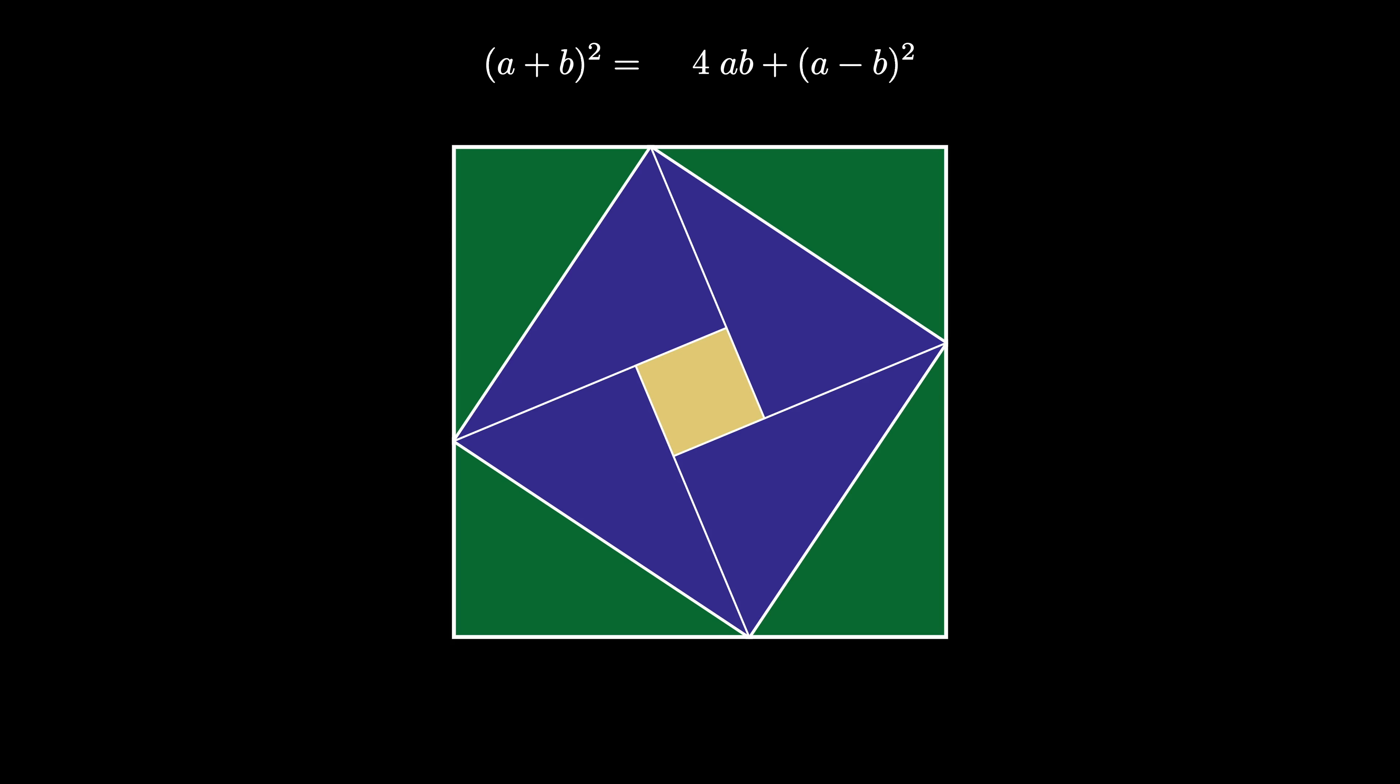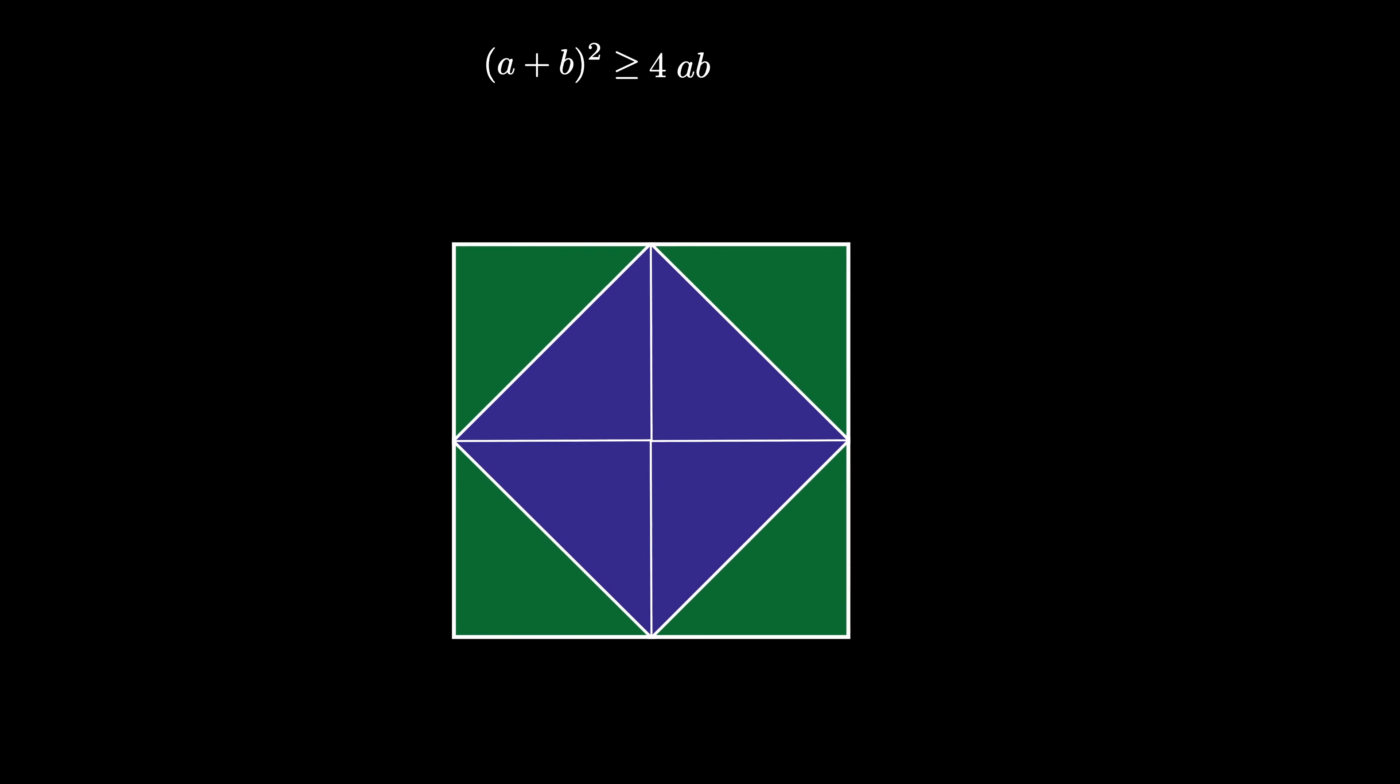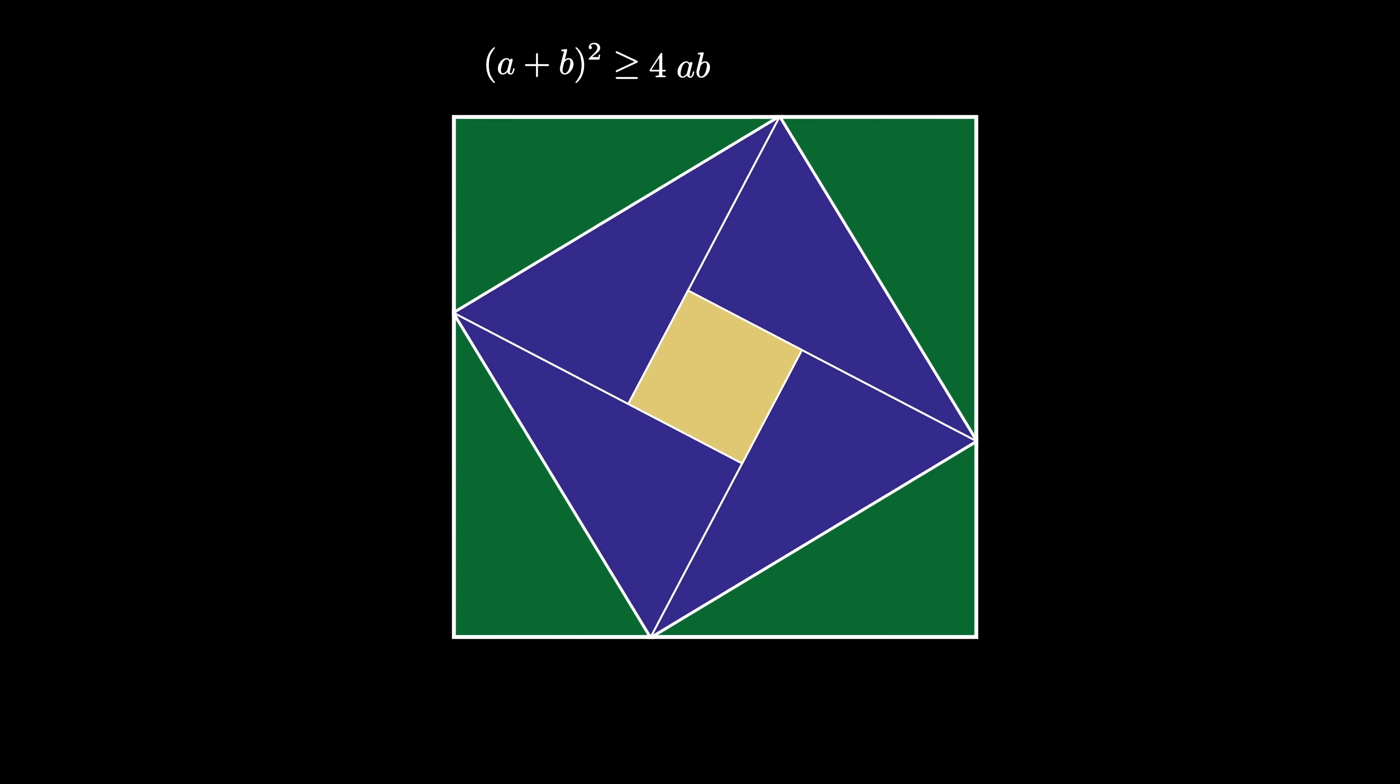Now we note that the quantity a minus b squared is always non-negative, so if we leave it off, we obtain the inequality a plus b squared is greater than or equal to 4 times a times b.